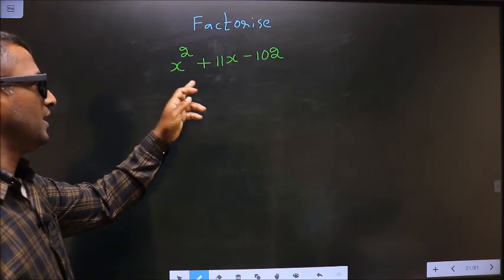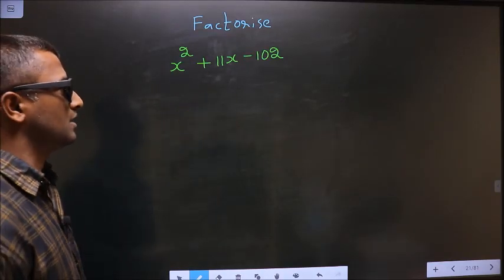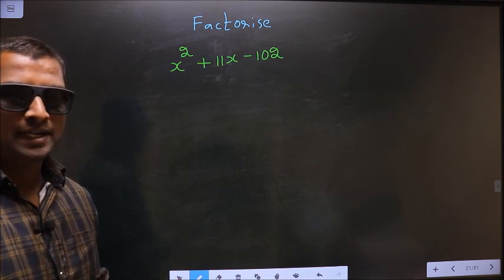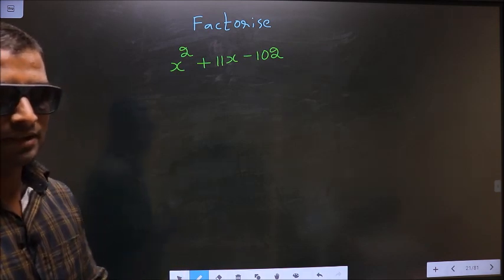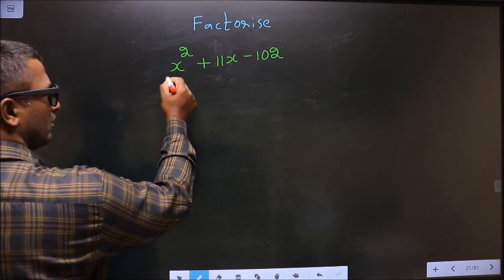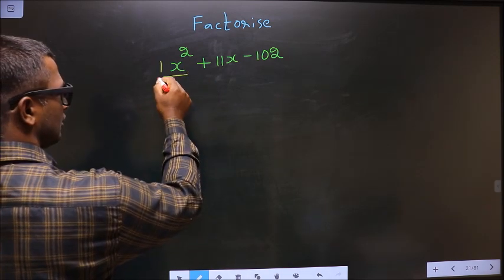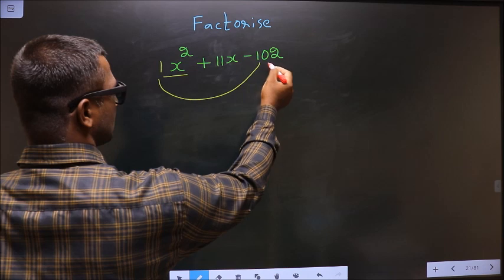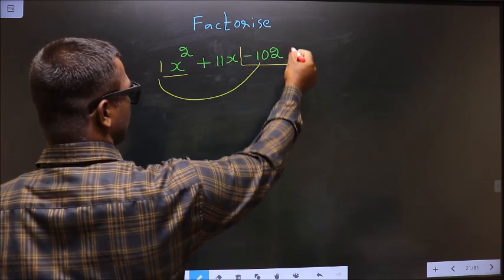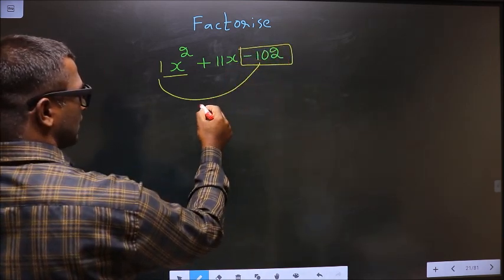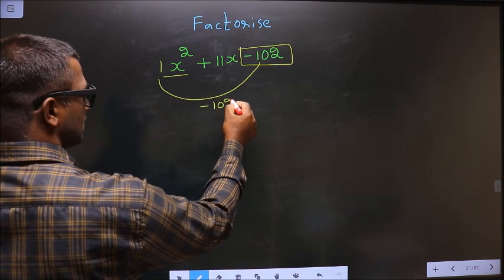Factorize x square plus 11x minus 102. To factorize, step 1: The coefficient of x square, which is 1 here, should be multiplied to the constant, that is minus 102. So 1 into minus 102 will result in minus 102.